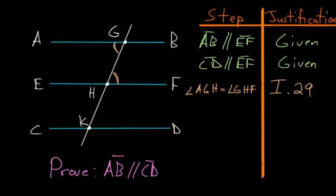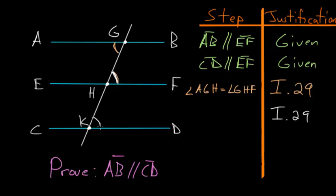We again use Book 1, Proposition 29, which also states that the exterior angle is equal to the interior and opposite angle. Focusing on lines EF and CD, the exterior angle GHF is equal to the interior opposite angle HKD.